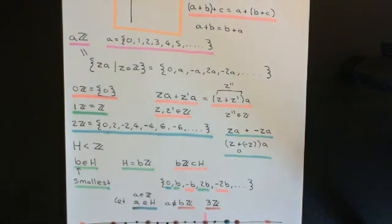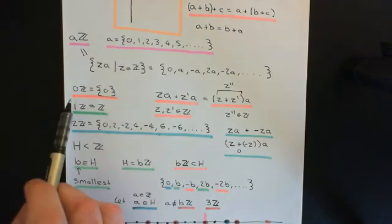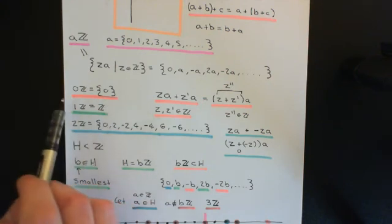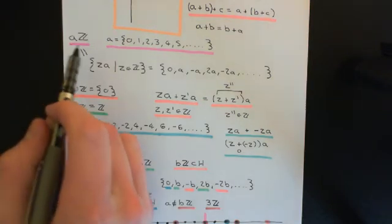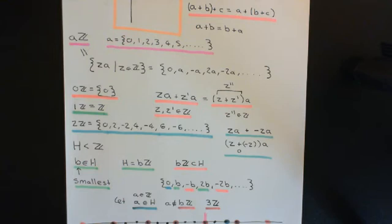What we now want to turn our attention to is proving that with the exception of 0ℤ — the subgroup which consists of just the identity element 0 in a set by itself — all the other subgroups of the integers under addition are actually isomorphic to the group of integers under addition. So they're isomorphic to their parent group.